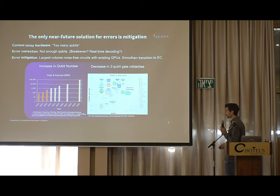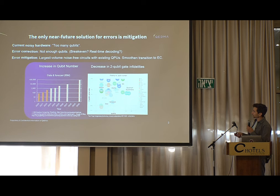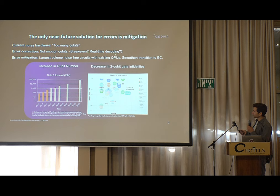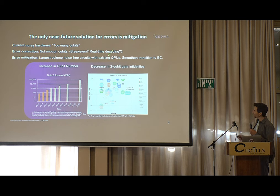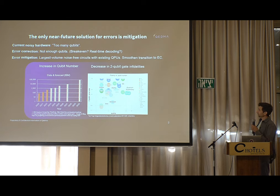The limiting factor today is two-qubit gate infidelity. If you try to error correct current hardware, you get very few logical qubits, not to mention the important challenges we heard about this morning. The current solution that we believe in, along with a chunk of this industry, is error mitigation.